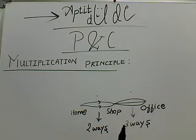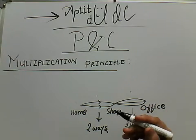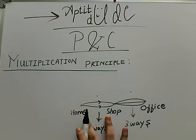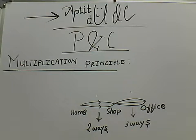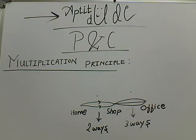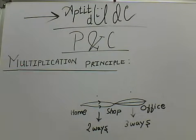So in this question, our main job was to get to the office from my home. But in this big job, we had some sub-jobs. Our first sub-job is going from home to the shop, and our second sub-job is getting to the office from the shop. So for getting the number of ways in which I can go from my home to the office, I need to multiply the number of ways to go from home to the shop by the number of ways to go from the shop to the office.